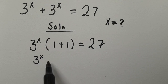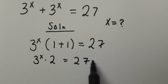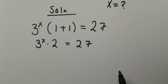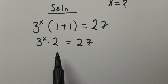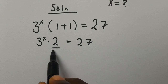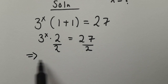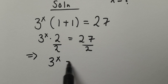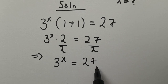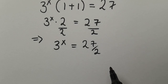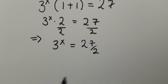From here we have 3 to the power of x multiplied by 2, equals 27. Then we divide through by 2 — this cancels — and so we have 3 to the power of x equals 27 divided by 2.